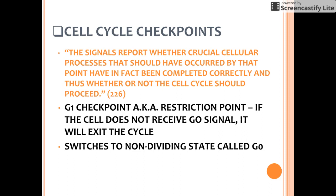If the cell does not receive a go-ahead signal at the G1 checkpoint, it will exit the cell cycle, switching into a non-dividing state called the G0 phase. Most cells of the human body are actually in the G0 phase. Mature nerve cells and muscle cells never divide. Other cells, such as liver cells, can be called back to the cell cycle by external cues, such as growth factors released during injury.